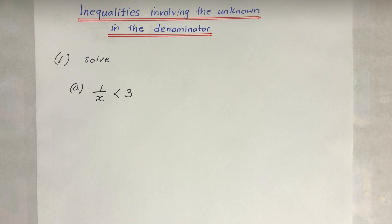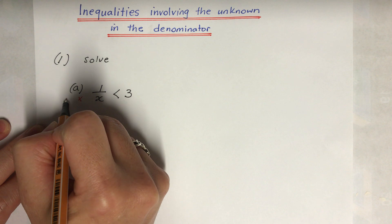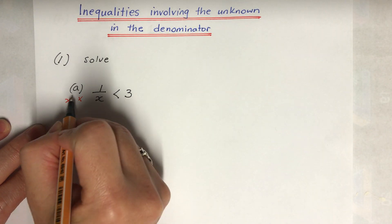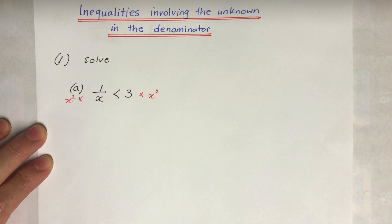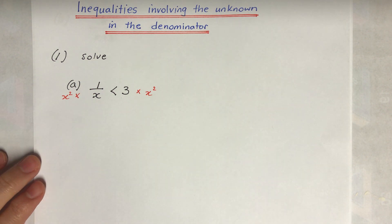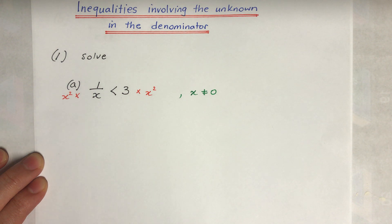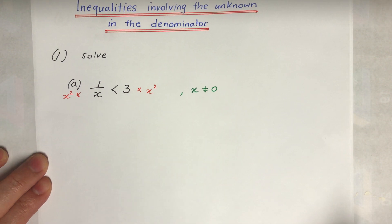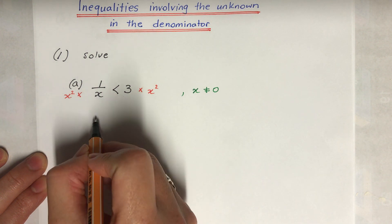Any number — positive or negative — when you square it, you get a 100% positive result. So we're going to multiply both sides by the square of the denominator. Before we do that, one important condition: x cannot be zero, because we cannot divide by zero. That restriction must be remembered all the way through when solving this inequality.